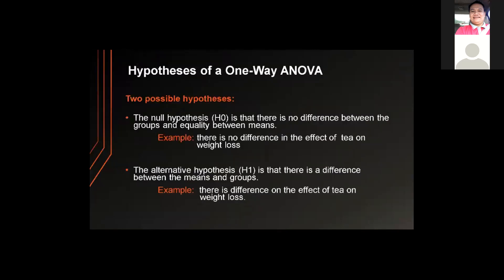There are two possible hypotheses in a one-way ANOVA: the null hypothesis and the alternative hypothesis. The null hypothesis states that there is no difference between the groups and equality between means — for example, no difference in the effect of tea on weight loss. The alternative hypothesis states that there is a difference between the means and groups — that there is a difference in the effect of tea on weight loss.